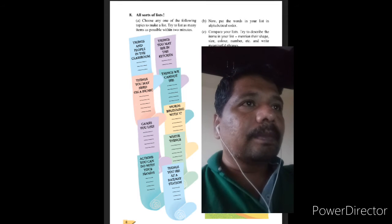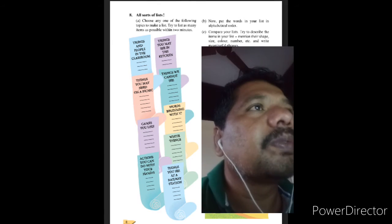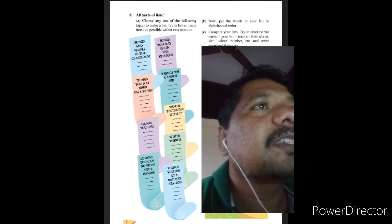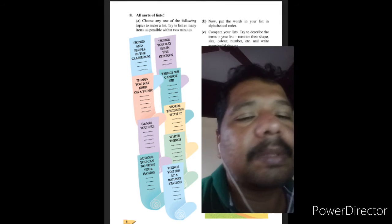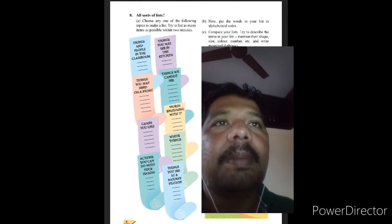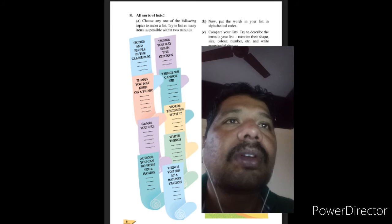On the page you will see some examples written here. Question B is also there: Now put the words in your list in alphabetical order. The words that you've written, arrange them in alphabetical order.